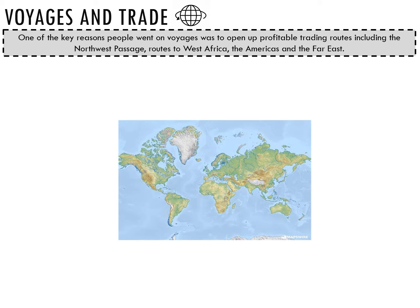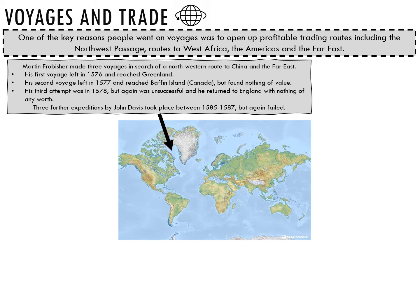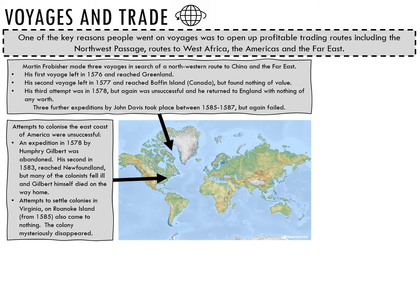One of the key purposes of Elizabethan exploration was to open up profitable trading routes, including the Northwest Passage and routes to West Africa, the Americas and the Far East. Martin Frobisher made three voyages in search of a northwest route to China: the first in 1576 reached Greenland; the second in 1577 reached Baffin Island but found nothing of value; and the third in 1578 was completely unsuccessful. Three further expeditions by John Davis were equally unsuccessful. Expeditions to colonise the East Coast of America also failed — Humphrey Gilbert's 1578 expedition was abandoned, his 1583 expedition reached Newfoundland but many colonists fell ill and Gilbert died on the way home. Attempts to settle colonists in Virginia on Roanoke Island from 1585 came to nothing and the colony mysteriously disappeared.